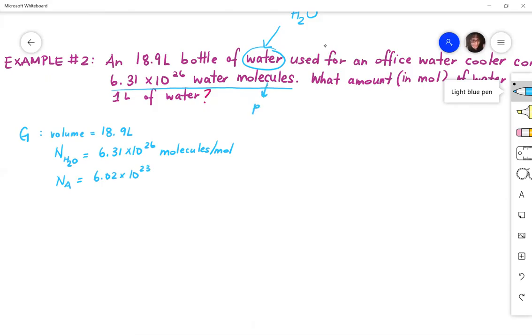And remember you always have Avogadro's number. 6.02 times 10 to the 23. And what are your particles this time? Your particles are molecules. So we're going to write down molecules. And I should make a correction here and take off this part here. This part should be the molecules per mole.